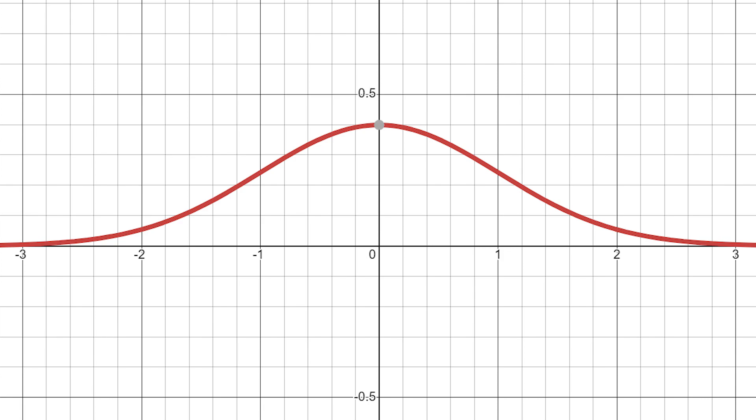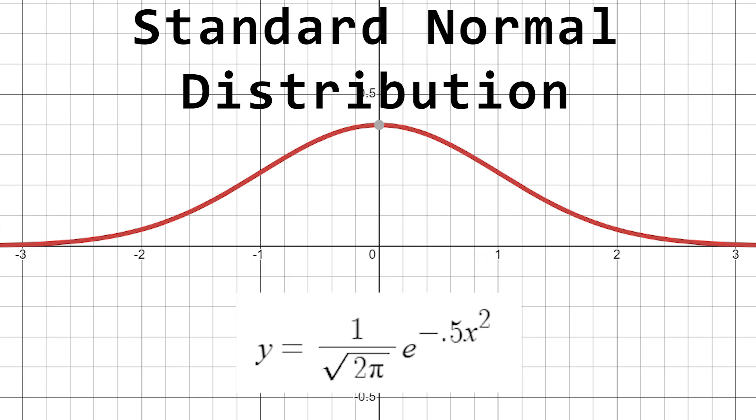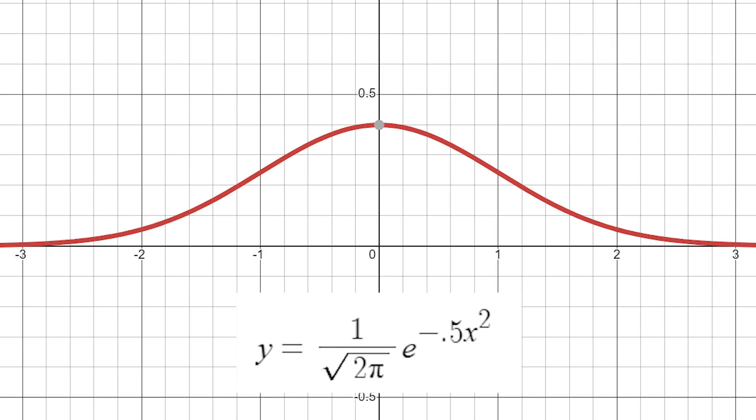Let's take a look at our bell curve, with a mean of 0 and a standard deviation of 1. This right here is called our standard normal distribution. This curve is defined by the equation y equals 1 divided by the square root of 2π times e to the negative 0.5x squared.